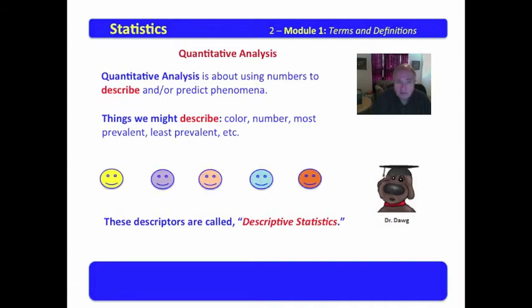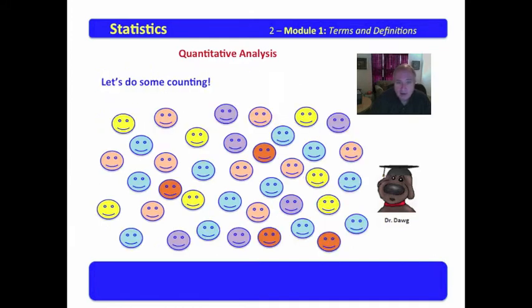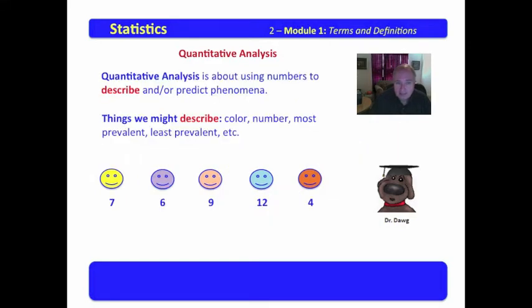Now, I want you to look at these five smiley faces here. Our group had five colors in it: yellow, lavender, tan, blue, and orange. Let's do some counting of those five colors. The yellow have seven, the lavender have six, the tan have nine, the blue have twelve, and the orange have four. So our most prevalent is the blue smiley face, and our least prevalent is the orange smiley face.